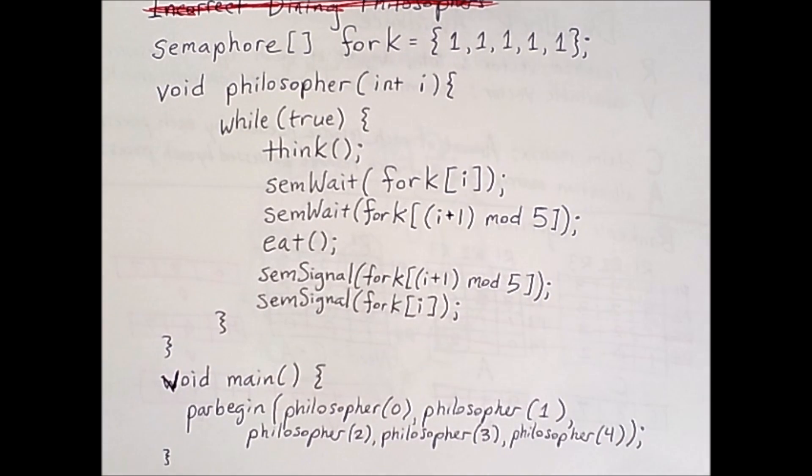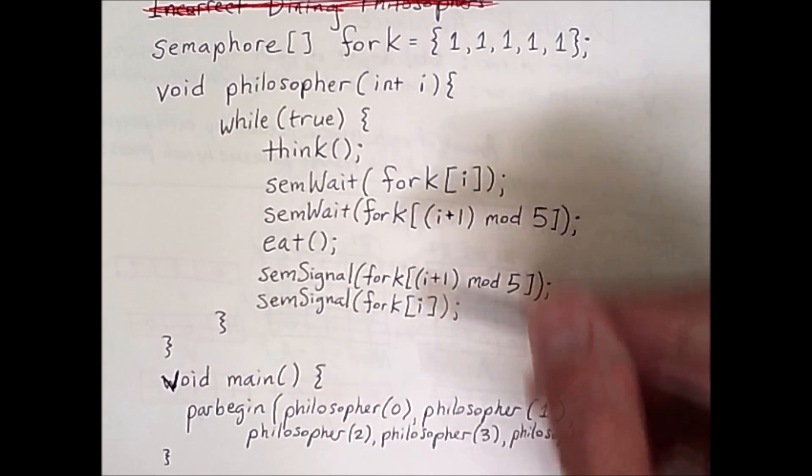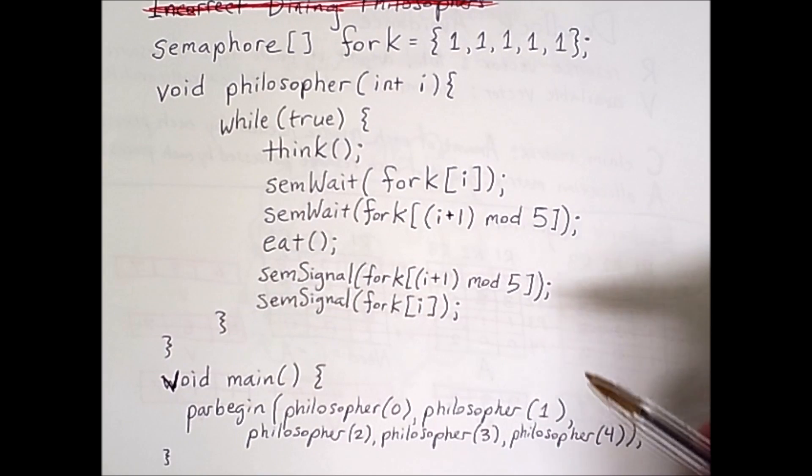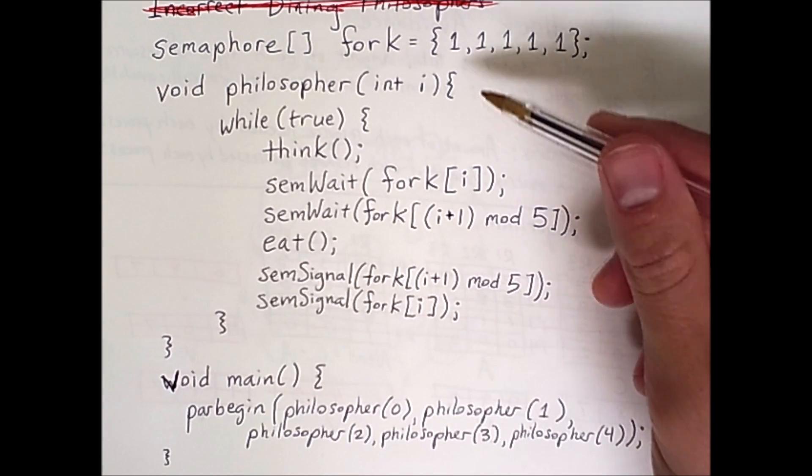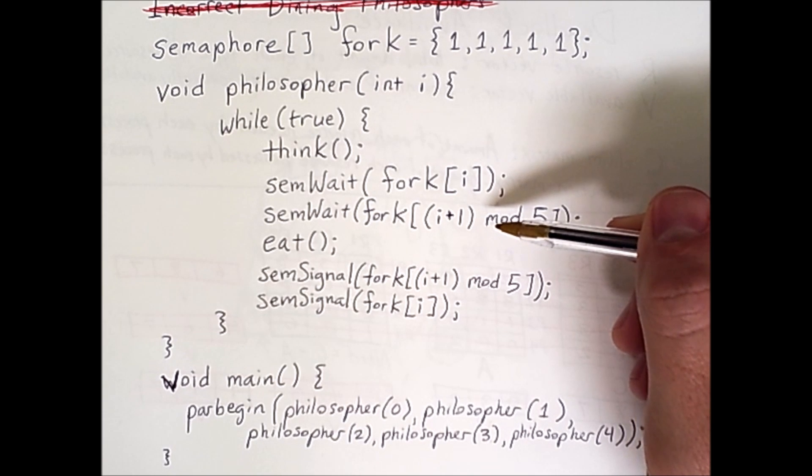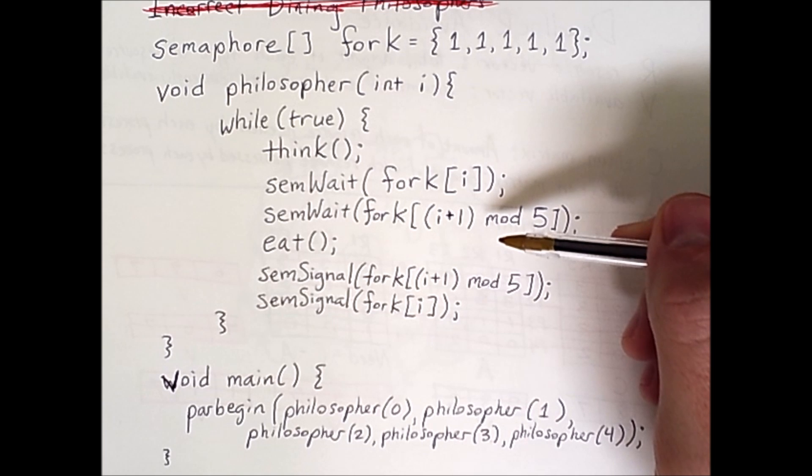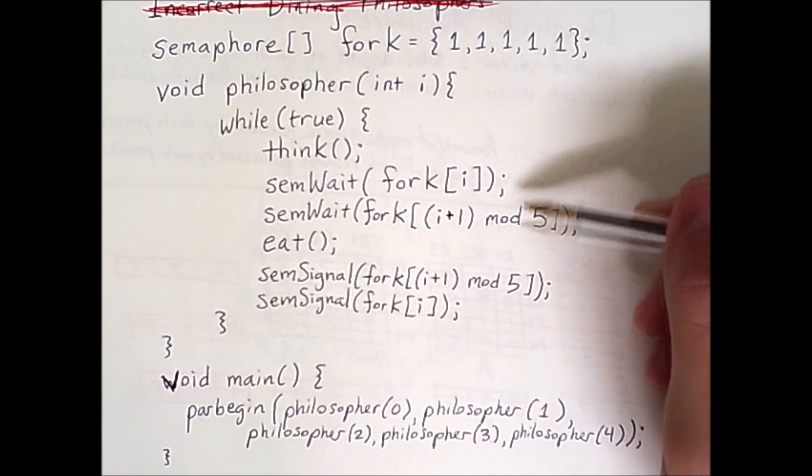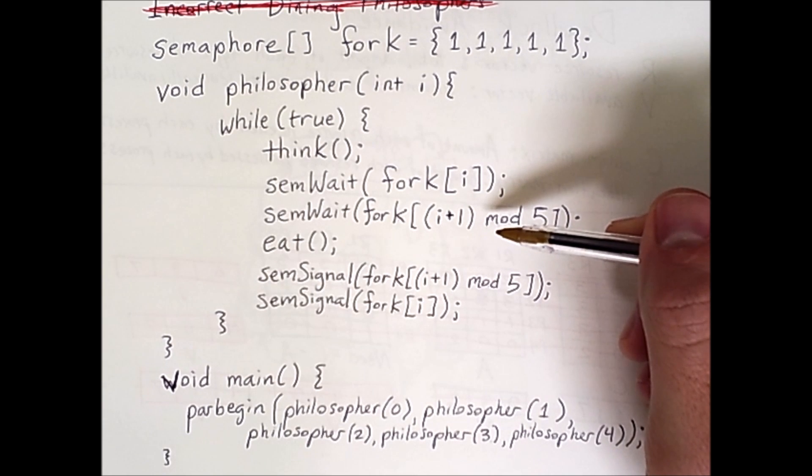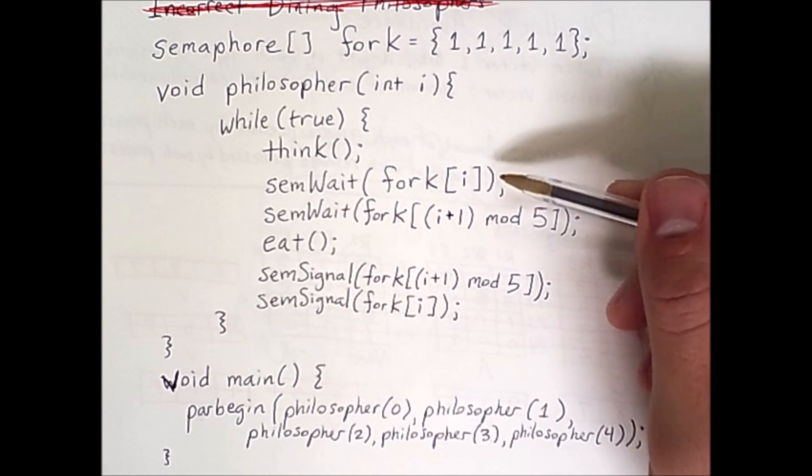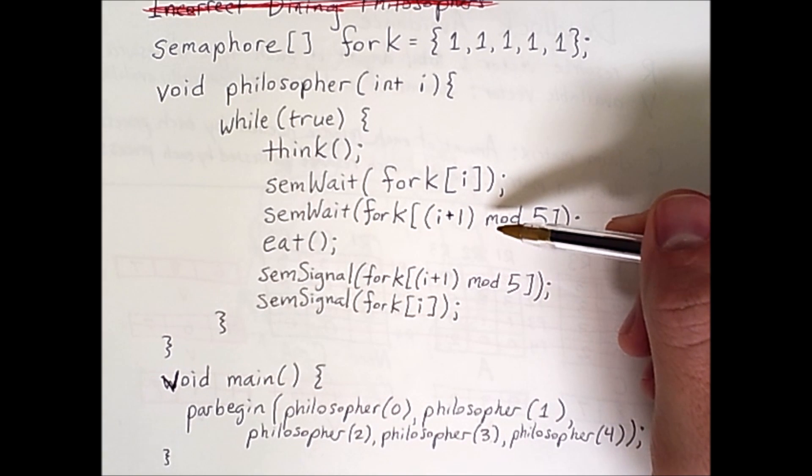What this means is that any time that any process requests a resource, or rather a group of resources, it has to request them in the same order that any other process would. The problem with this current solution is that process 0 through 3 requests the lower numbered fork first. Process 0 requests 0 and 1, process 1 requests 1 and 2, and so on. But process 4 requests fork 4 first, and then 4 plus 1 mod 5, which is 0. That means that the order of fork requests here differs from the order being used by all other philosophers.